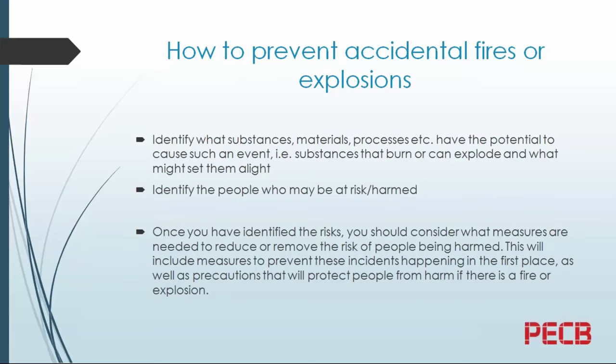Identify what substances, materials, or processes have the potential to cause such an event, and identify people who may be at risk — those who work closely in these areas. Once you have identified the risk, consider what measures are needed to reduce or remove the risk of people being harmed. This includes measures to prevent accidents happening in the first place, as well as precautions that will protect people if there is a fire or explosion.